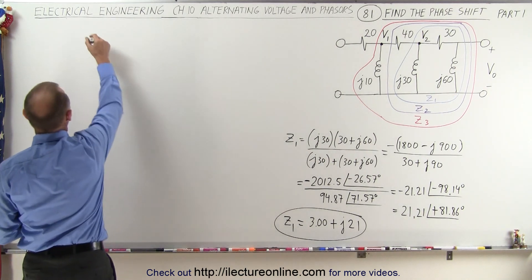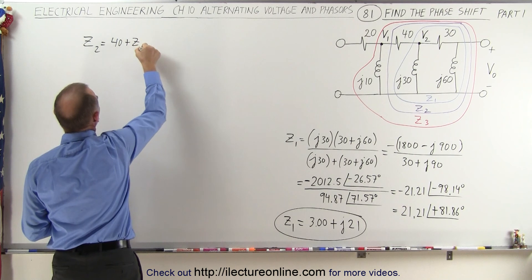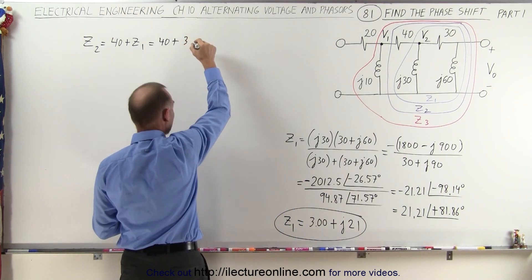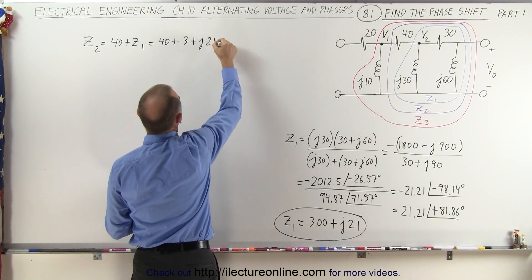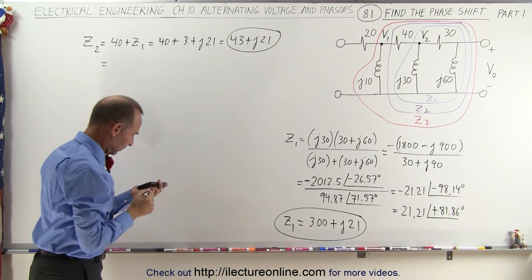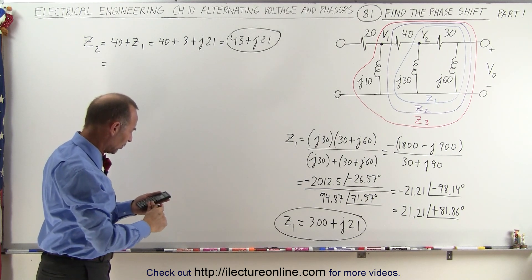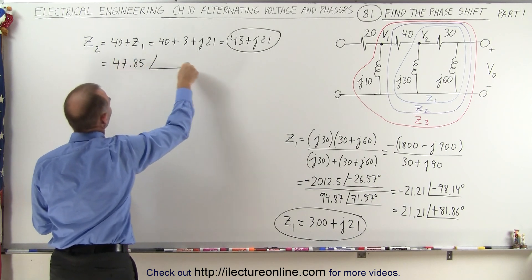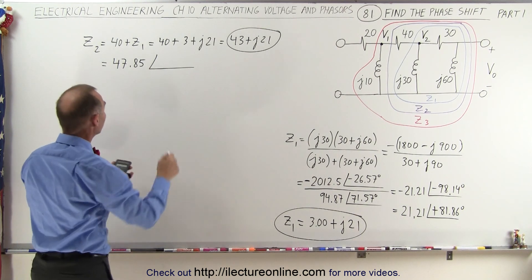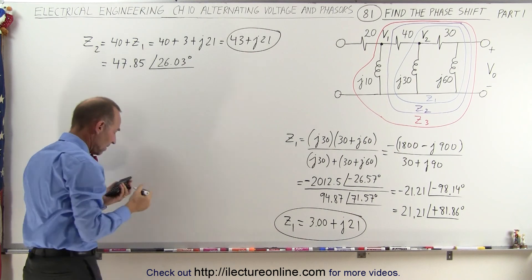Now we're ready to calculate Z2. Z2 is equal to, we're going to add 40 to Z1, so that would be 40 plus Z1, which is equal to 40 plus Z1 written like this, that would be 3 plus J21, which is equal to 43 plus J21. And if we're going to write this as magnitude and phase angle, we take 43 squared plus 21 squared, take the square root, we get 47.85, and a phase angle of 21 divided by 43, take the inverse tangent, that's 26.03 degrees. So now again we have Z2 in terms of the real and imaginary part, or Z2 in terms of the magnitude and the phase angle part.